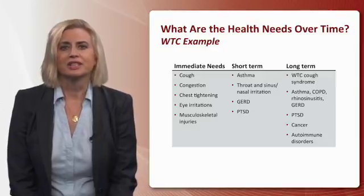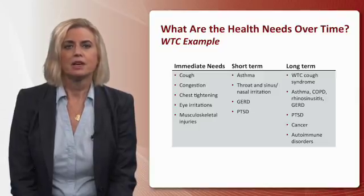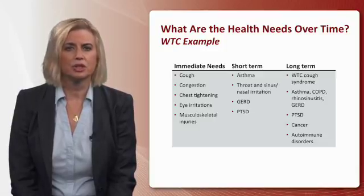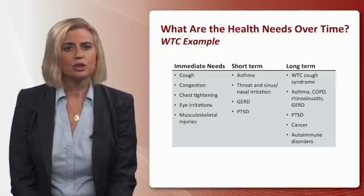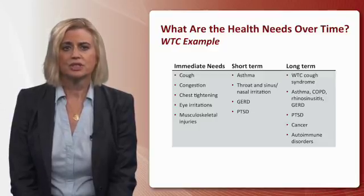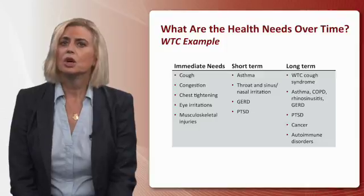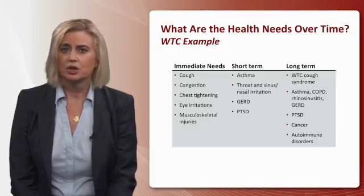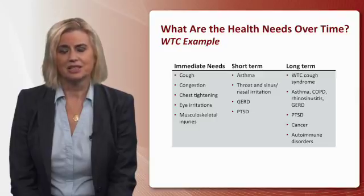The health needs that developed over time from the World Trade Center example include: immediate needs of cough, congestion, chest tightness, eye irritation, and musculoskeletal injuries. Short-term conditions included asthma, throat, sinus and nasal irritation, gastroesophageal reflux disease (GERD), and post-traumatic stress disorder (PTSD). Long-term medical problems include World Trade Center cough syndrome, asthma, COPD, rhinosinusitis, GERD, autoimmune disorders, cancer, and persistent PTSD.